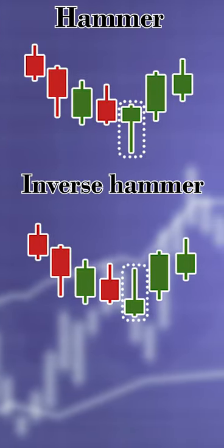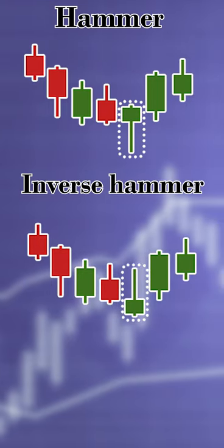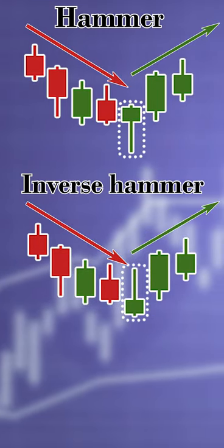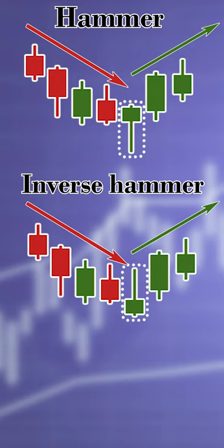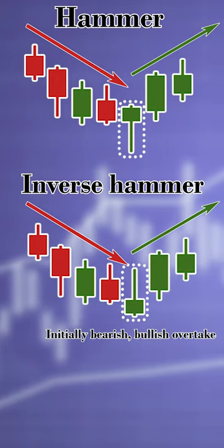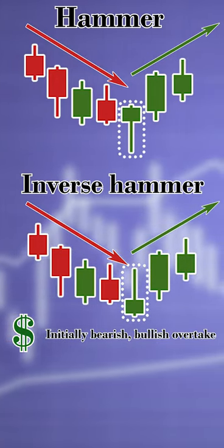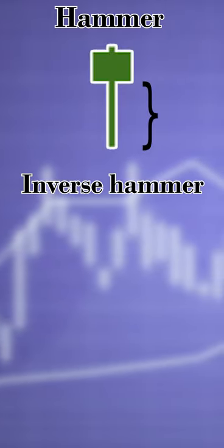The hammer and inverse hammer are bullish patterns indicating a shift from downward or bearish to upward or bullish trend. This means buyers are overcoming the sellers and the share is increasing in price. Hammers have long lower shadows.